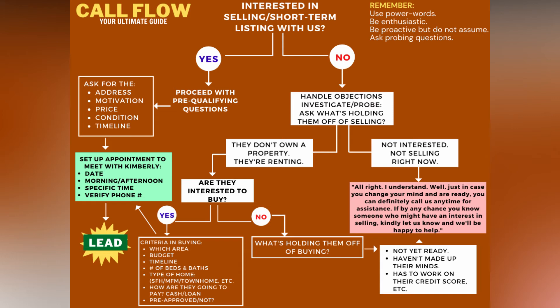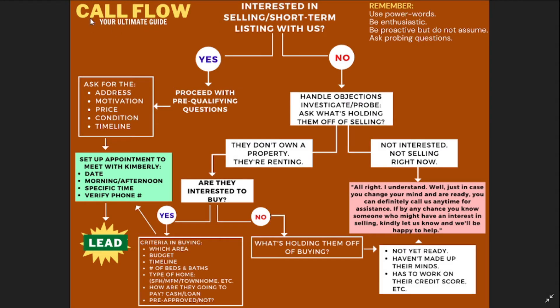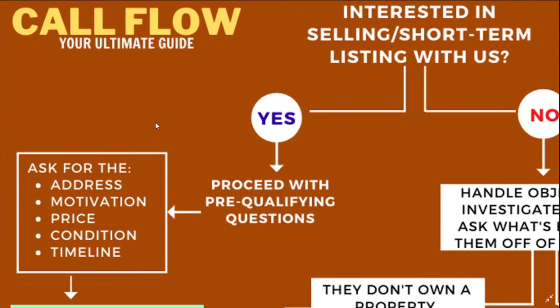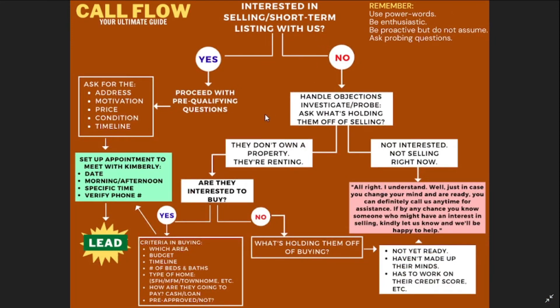If the name on the records is for a man and a woman answered, address her by the last name with the correct designation — 'Miss' or 'Missus.' Then introduce yourself. Say your name and the company you're affiliated with and the reason for your call — whether they are interested in selling, a short-term listing, or buying. That's why the call flow exists. I created this in the most straightforward way possible so everyone gets an idea of how a call should go. It's an ultimate guide for a structural approach so you know exactly what the next steps are. Try to get their attention — you can only do that if you sound enthusiastic and confident.